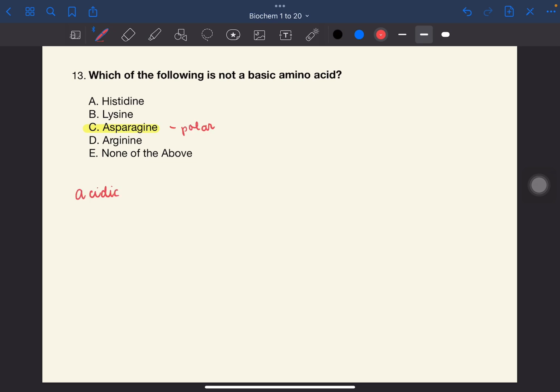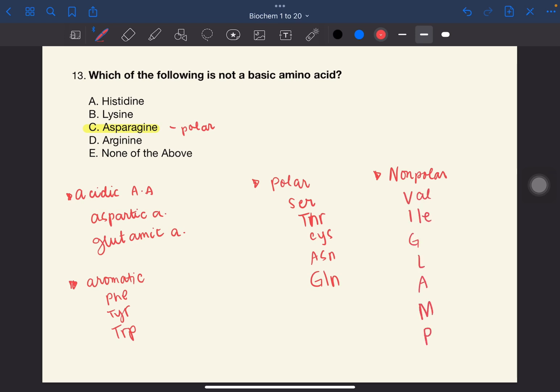For the acidic amino acids, we have aspartic acid and glutamic acid. For aromatic: phenylalanine, tyrosine, and tryptophan. For polar: serine, threonine, cysteine, asparagine, and glutamine. For non-polar, we have VIGLAM: valine, isoleucine, glycine, leucine, alanine, methionine, and proline.